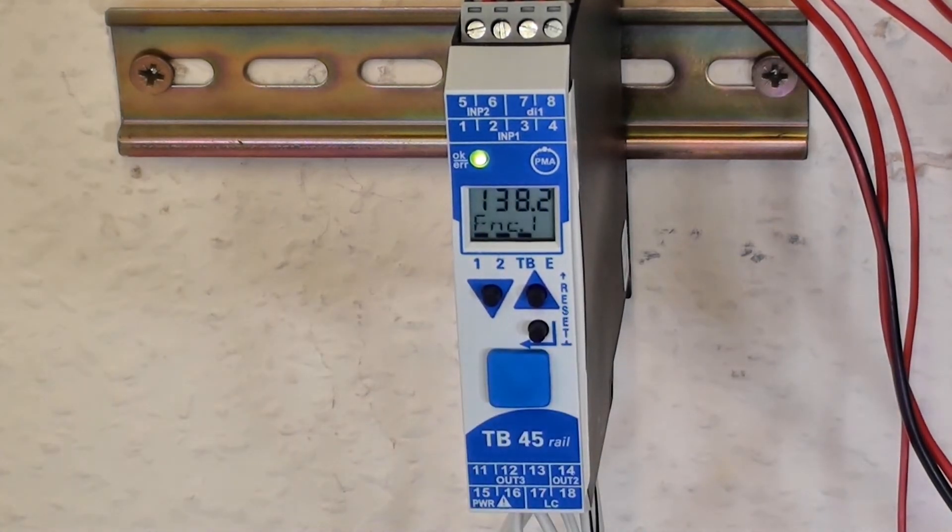Limit. The function for that limit alarm, the LC alarm, I've selected function 7. And from the lookup table, F7 means I've selected it as a temperature limiter.